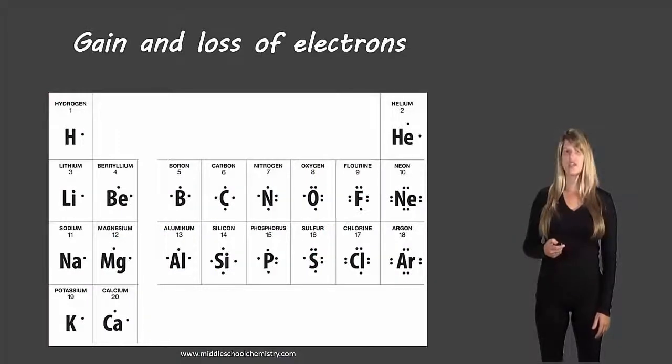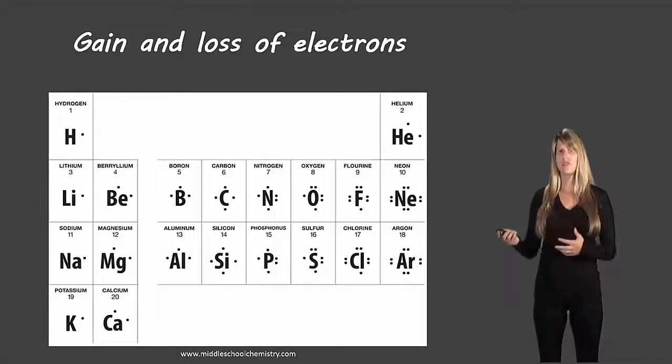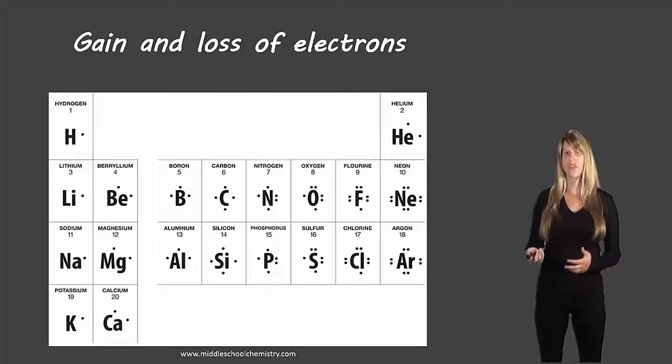So let's take a look at a simple way to figure out if there's going to be gain or loss of electrons and how many. Here we have the Lewis dot diagrams of the first twenty elements and we've already taken a look at the pattern. Everything in the first column has one valence electron, everything in the second column two valence electrons, and all the way across to eight.